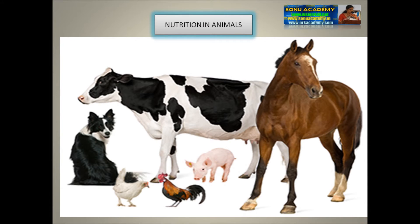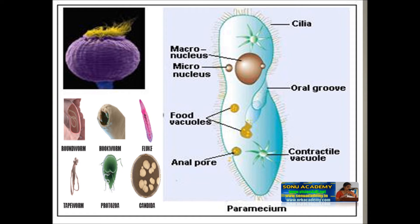Points to remember from this lesson: All animals are heterotrophs as they cannot prepare their own food. There are two types of heterotrophic nutrition: saprozoic and holozoic. Some protozoans and several parasites exhibit saprozoic nutrition, absorbing food material dissolved in the water in which they live.